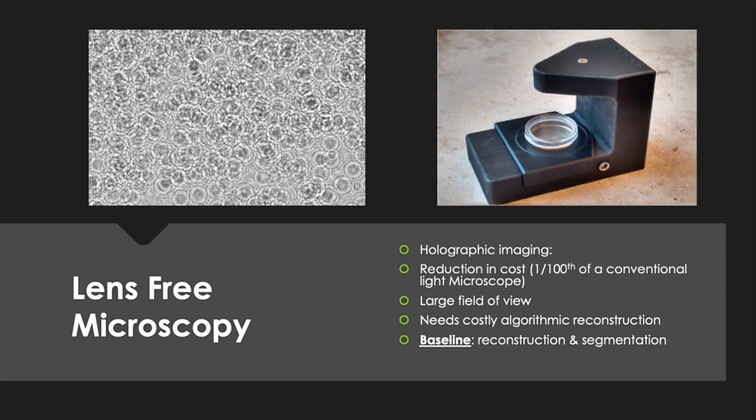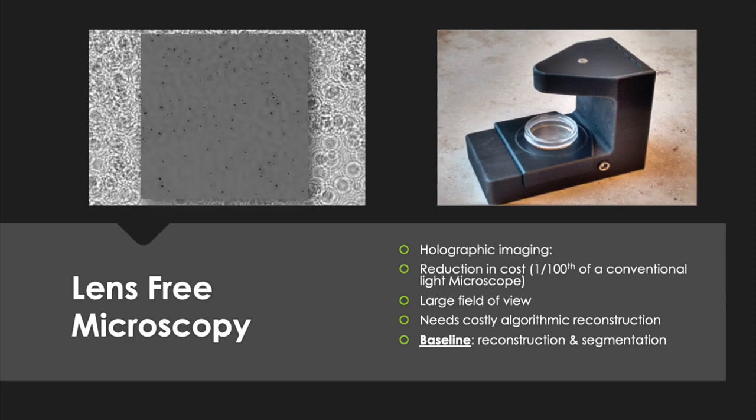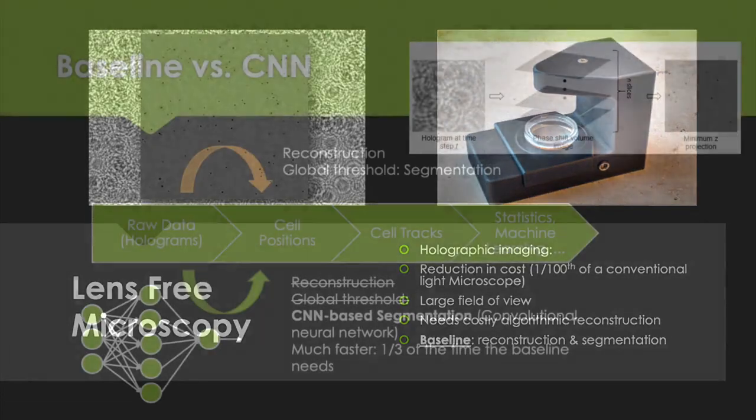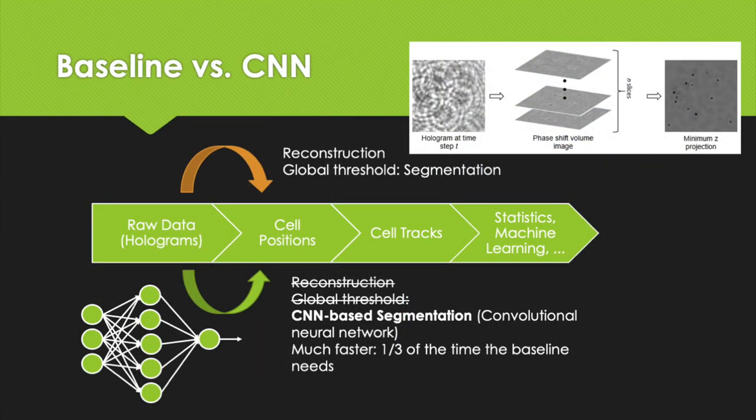An example of the reconstruction can be seen on the left. The baseline algorithm to acquire cell positions needs first set reconstruction, followed by the subsequent segmentation from which we can compute the centroids of each cell. A global threshold suffices to get good segmentation results. The arrows in the middle show the complete workflow of our project. From the holograms, we extract cell positions, combine them to cell tracks that we can further analyze.